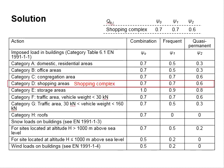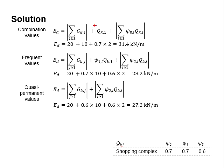To solve this question, first determine the factors for the site. The shopping complex is categorized under category D. The psi nought, psi 1, and psi 2 are obtained as 0.7, 0.7, and 0.6 respectively. Adopting these factors into the equations,